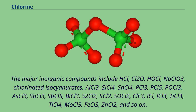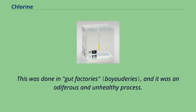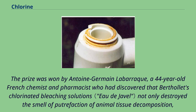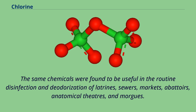In France, animal intestines were processed in gut factories to make musical instrument strings and other products — an odiferous and unhealthy process. In or about 1820, the Société d'Encouragement pour l'industrie nationale offered a prize for the discovery of a method for separating the peritoneal membrane of animal intestines without putrefaction. The prize was won by Antoine-Germain Labarraque, a French chemist and pharmacist who had discovered that Berthollet's chlorinated bleaching solutions not only destroyed the smell of putrefaction of animal tissue decomposition, but also actually retarded the decomposition. Labarraque's research resulted in the use of chlorides and hypochlorites of lime and of sodium in the preparatory processes. The same chemicals were found to be useful in the routine disinfection and deodorization of latrines, sewers, markets, abattoirs, anatomical theatres, and morgues.